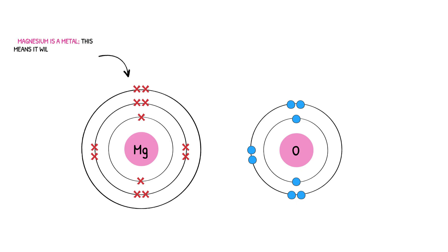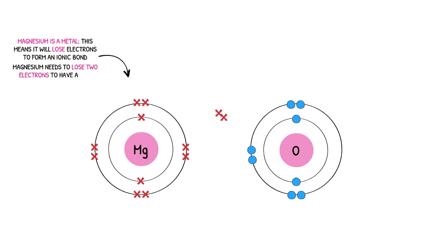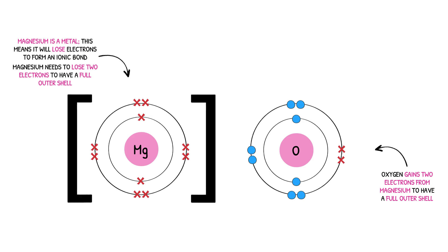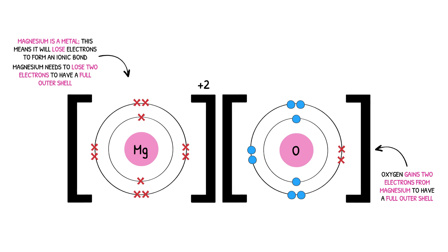As magnesium is a metal, it will lose these two outer shell electrons to achieve a full outer shell of eight electrons. These two electrons are gained by oxygen, for it to achieve a full outer shell of eight electrons too. As electrons have been transferred, we must now add brackets to indicate that these particles are charged. Magnesium has lost two electrons and so becomes a positive ion with a plus-two charge, and oxygen has gained two electrons and so becomes a negative ion with a minus-two charge.